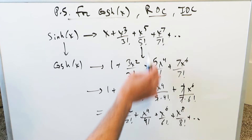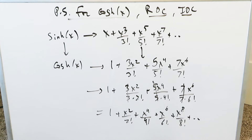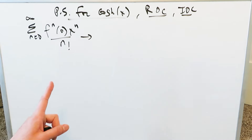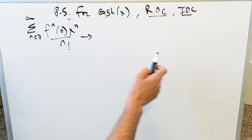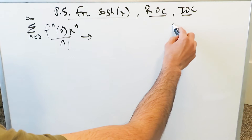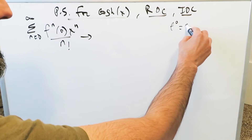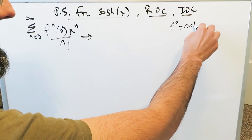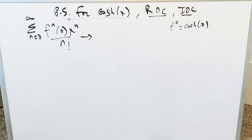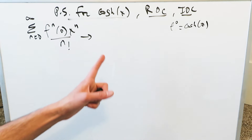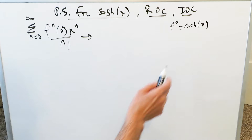That was the derivative shortcut: derivative of the sinh series gives you the cosh series. Let's now show the formalized way. We will use a Maclaurin series route, centering everything around 0. The derivatives are easy — the zeroth order derivative is just the hyperbolic cosine function itself, and we evaluate everything at 0 because we're using the Maclaurin series approach.